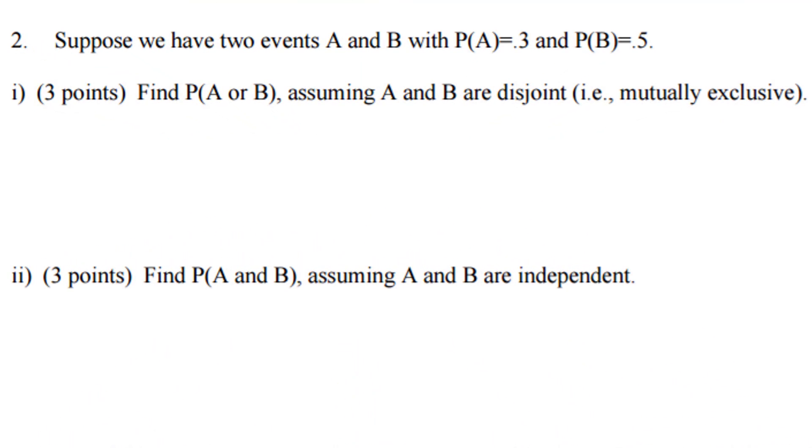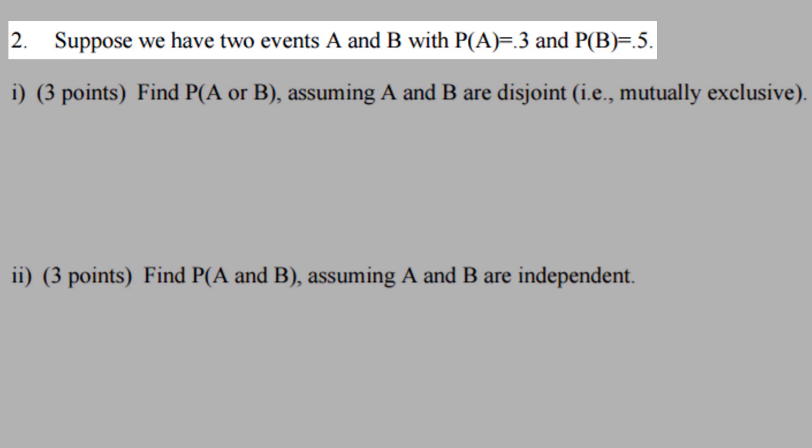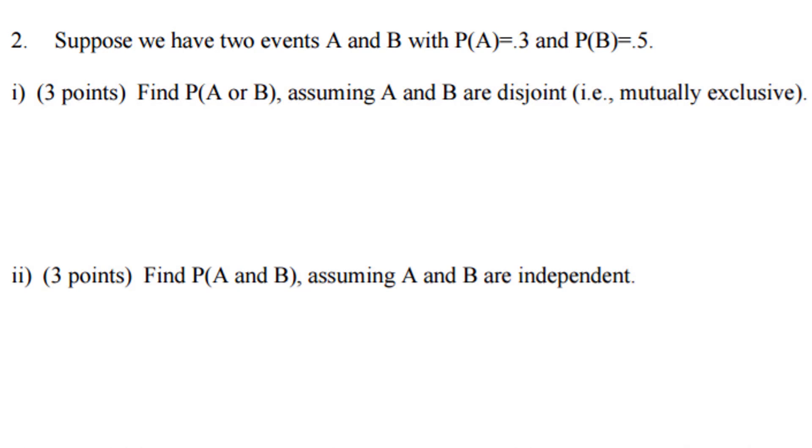For the second problem, we will continue with some of the rules of probability. Suppose we have two events, A and B, where the probability of event A is 30% and the probability of event B is 50%.